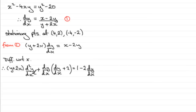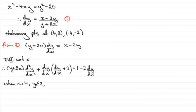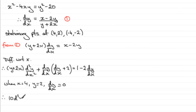Now we need to make d²y/dx² the subject, but since we're going to substitute specific values it's more efficient to substitute directly. At the stationary point (4, 2), x = 4 and y = 2, and crucially dy/dx = 0. Substituting: y + 2x = 2 + 8 = 10, so we get 10 · d²y/dx².